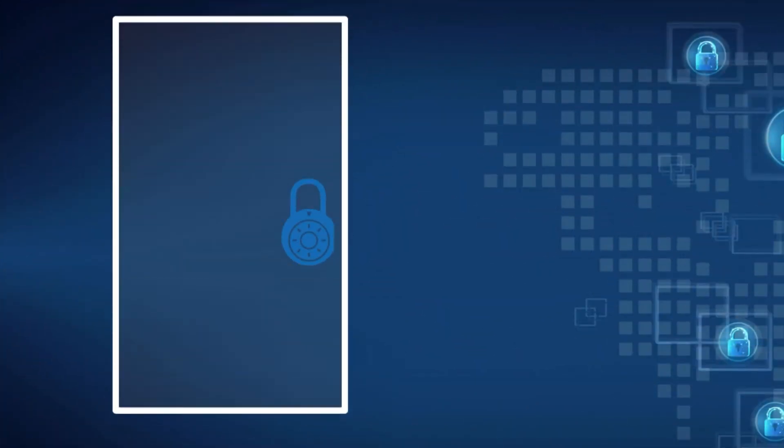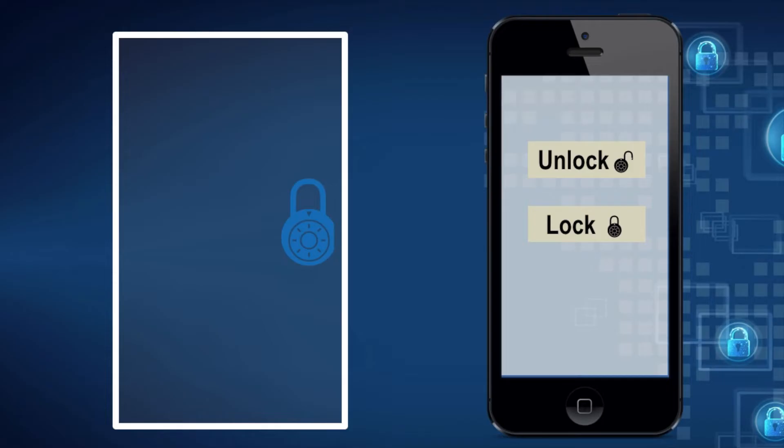Now let us see why security is needed. For example, there is a lock in your door and we have a mobile app where we can unlock and lock the door. If you click on unlock, that automatically your lock will be opened. If anybody gets your mobile or hacks your mobile and has this application, anybody can open the lock at your home without your concern, and finally it may cause issues at your home.